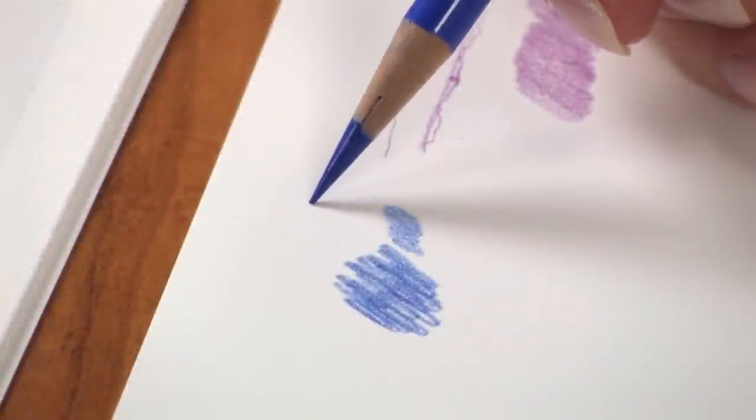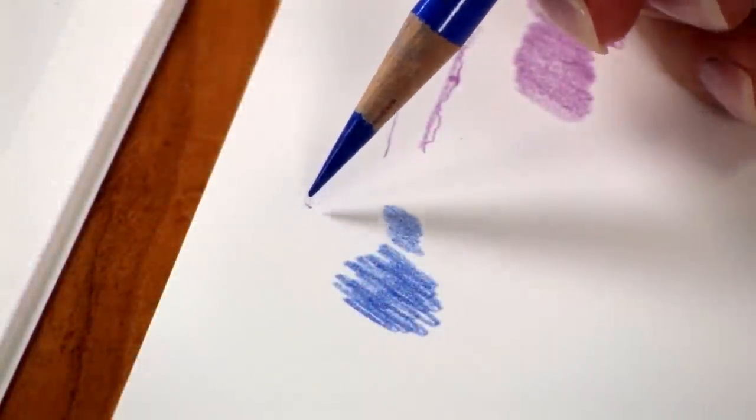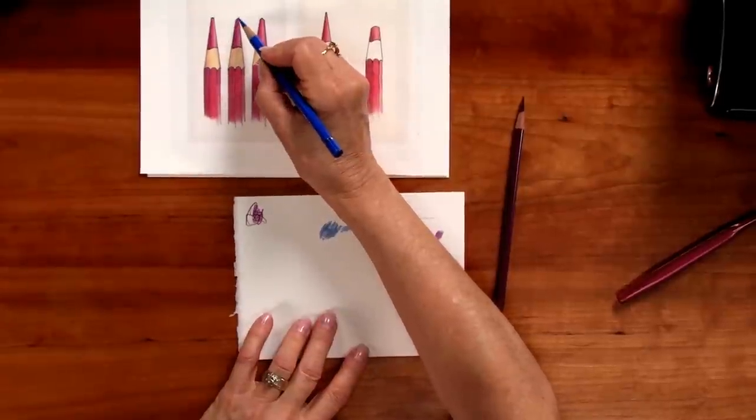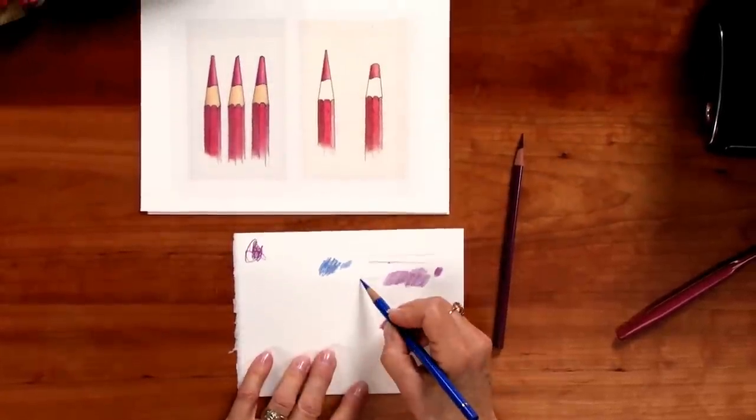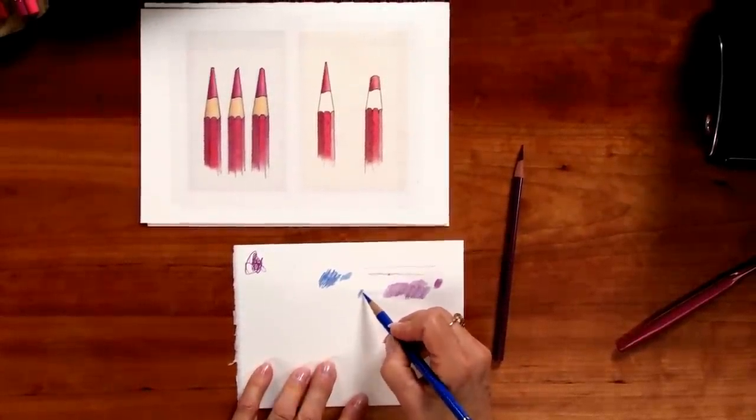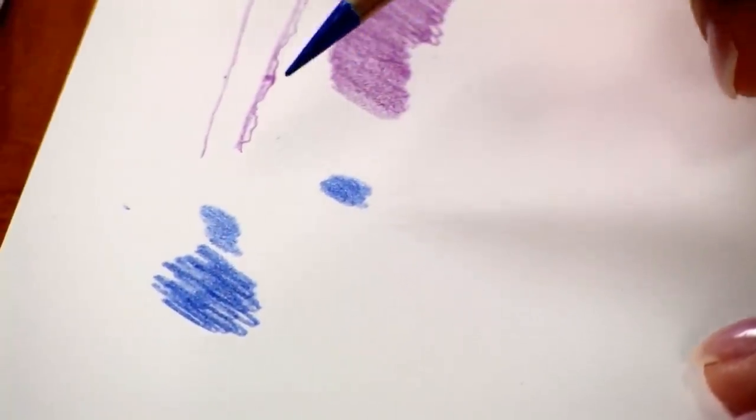When I work, I begin to rotate the pencil just a little bit so that I can let that edge put the color down on the paper. That gives me better control over where the color's going.